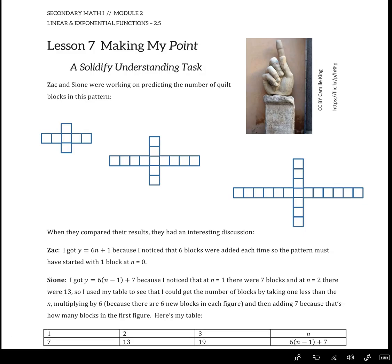Zac and Sion were working on predicting the number of quilt blocks in this pattern. As you can see, it's summarized in the table down here. We have n equals 1, the first set of blocks, there's 7 blocks, then at n equals 2 there's 13 blocks, n equals 3 there's 19 blocks. And so Zac and Sion both came up with different rules.